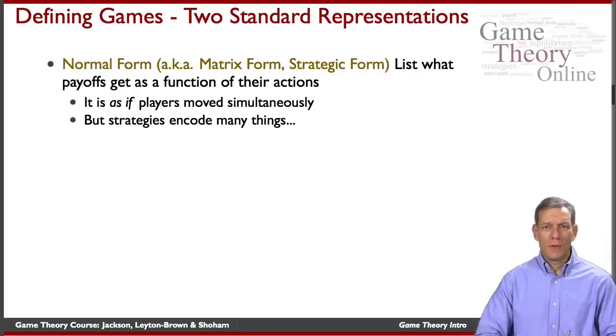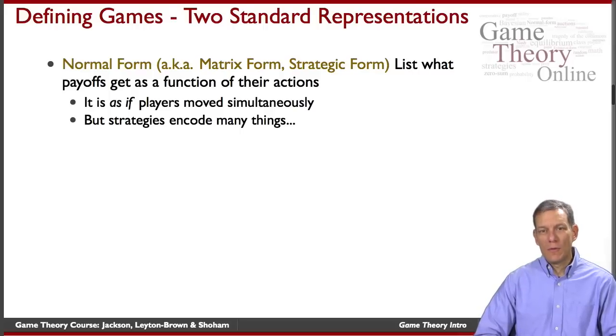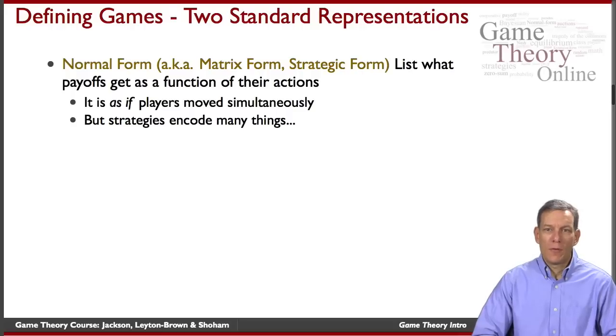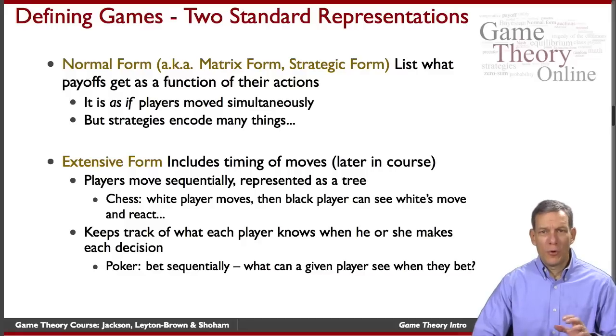There's basically two standard representations of games. One is what's known as the normal form and that's what we'll be starting with in the course. It's a very simple and stark representation of a game. It lists what payoffs players get as a function of their actions. Normally it's thought of as if players are moving simultaneously, but strategies can encode many things.